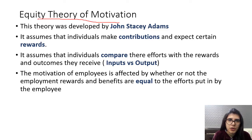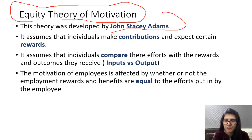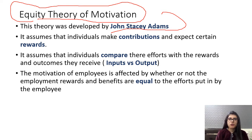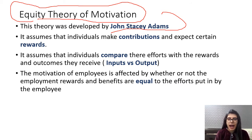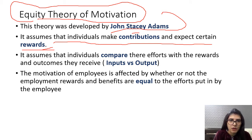Now comes the equity theory of motivation. It has been given by John Stacey Adams and is often called the Adams equity theory. You should know the full name of who has given this theory. It assumes that when we work in an organization, we give our inputs in the form of efforts, and what we expect is output from the organization. The main keyword here is input and output.